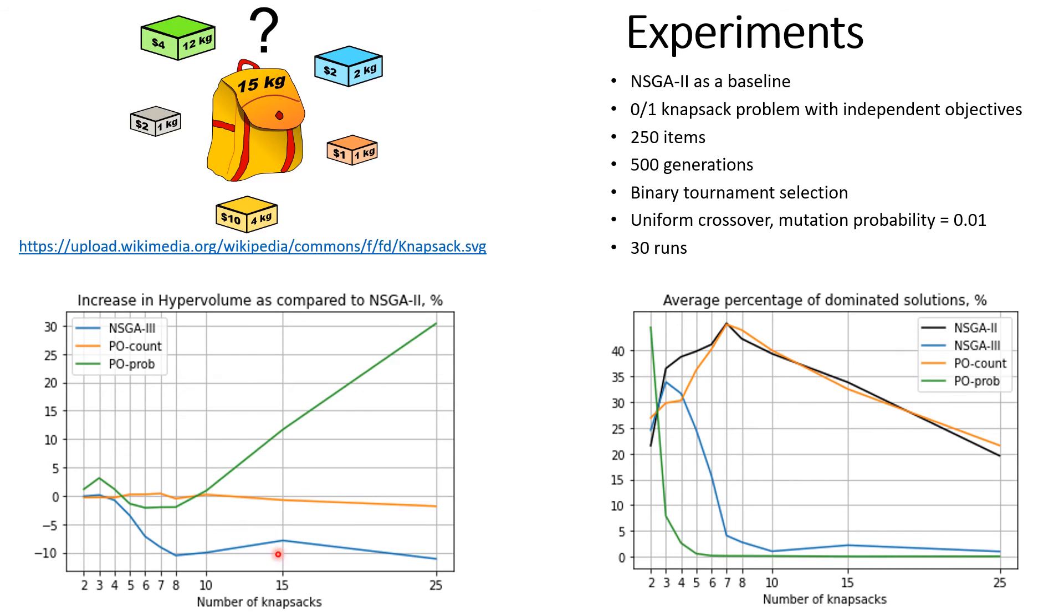To evaluate the performance of the proposed sorting procedure, we incorporated it into an NSGA-II algorithm and attempted to solve 0-1 knapsack problem. In our experiments the number of objectives ranged from 2 to 25, and we used NSGA-II and NSGA-III algorithms as baseline.